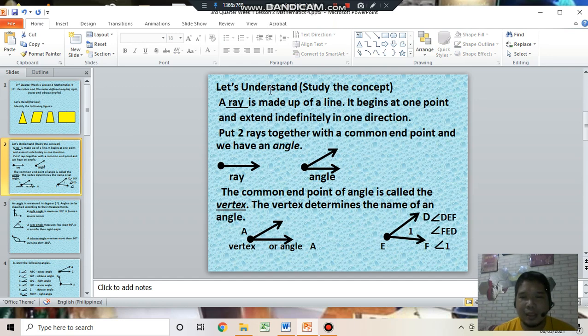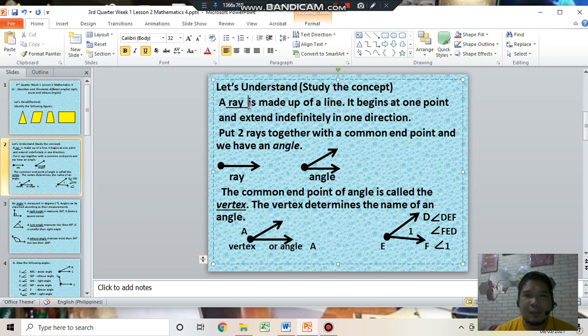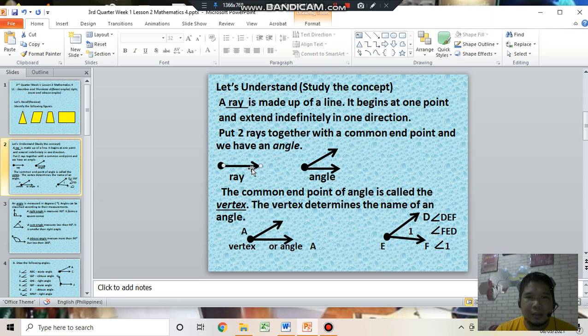Let's understand, study the concept. A ray is made up of a line. It begins at one point and extends indefinitely in one direction. Put two rays together with a common endpoint and we have an angle. This is an illustration of a ray, point, and then indefinite one direction. If you put together two rays, it becomes an angle.